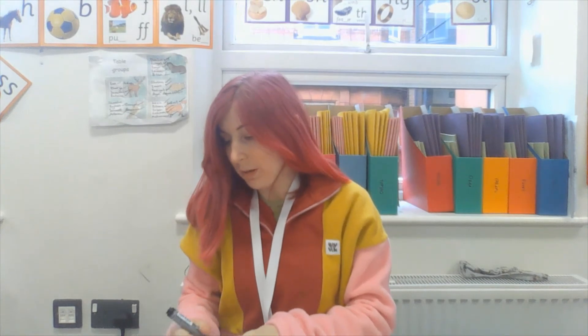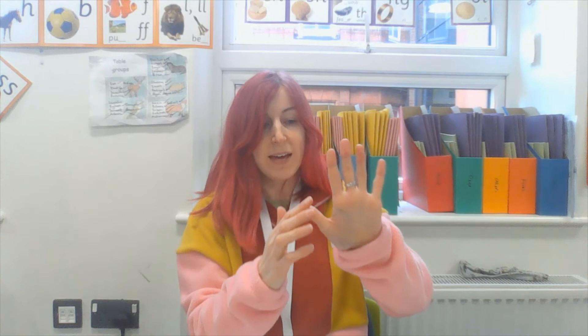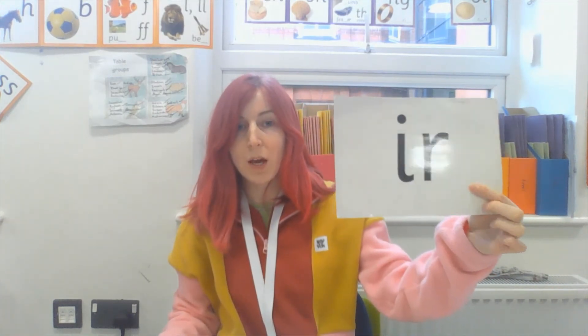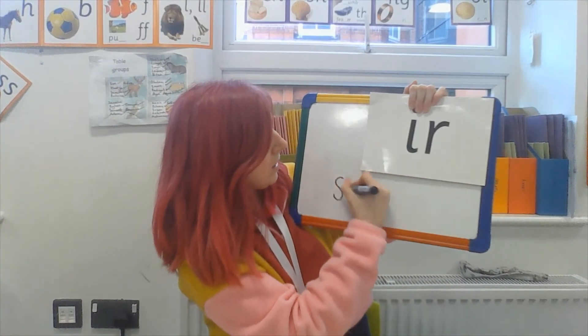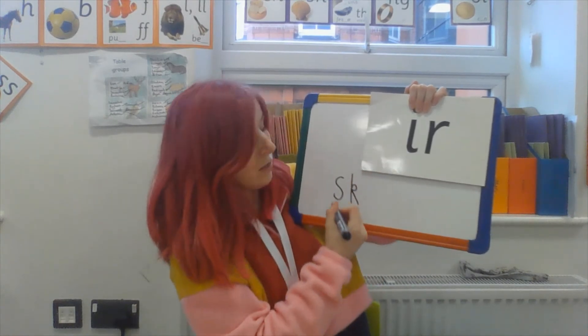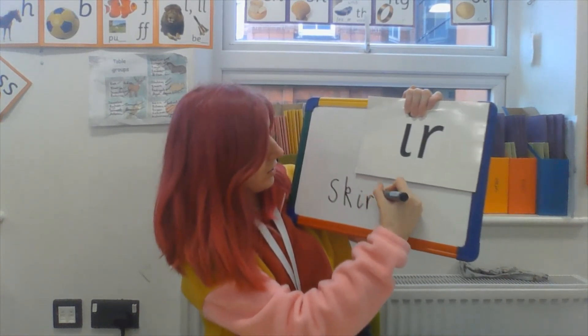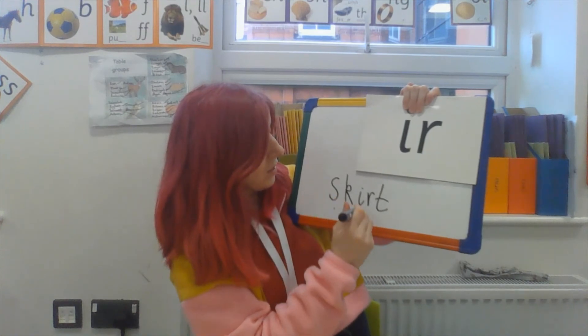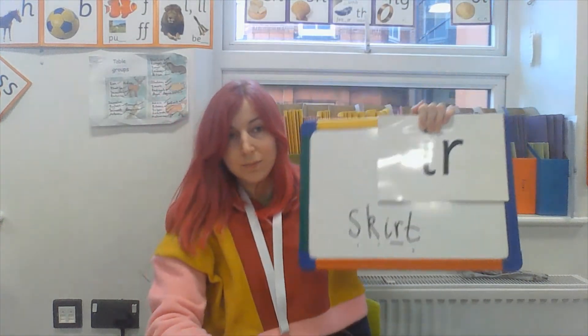Next one I would like you to have a go at - the word is 'skirt'. Now listen carefully because it's got that phase four crunchy crab blend at the beginning: sk. Skirt. Pause the video and restart when you're done. Sound out for me: S-K - sk - ir - T - skirt. Well done.